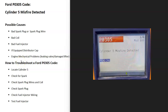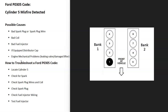Today I'm talking about a Ford with the P0305 code — what it is and how you go about fixing it. The P0305 code is a cylinder 5 misfire detected. Each cylinder inside the engine needs to have the right air-fuel ratio mixture going into it, and then it needs a spark to ignite this for the engine to run correctly. For some reason, on cylinder number five, this is not happening.